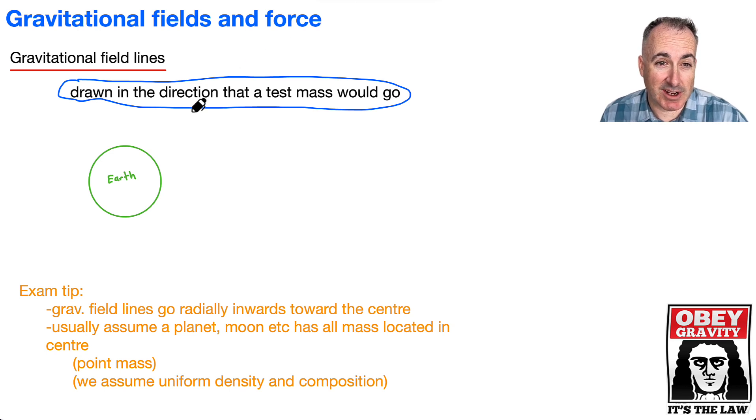If I dropped a little mass, let's say I had a little mass right here to the right—where would it go? Well, this is the Earth, it would fall inwards. If I put it over here it would go this way, and of course from the top it would go down, and so on.